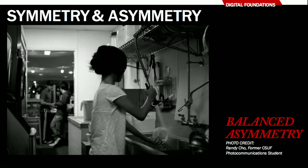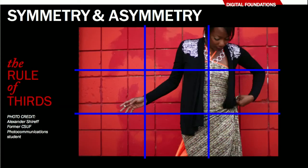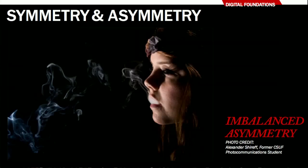Bringing up the rule of thirds grid as we look at asymmetric photographs that are imbalanced — imbalanced asymmetry really feels wrong, and you probably got it right if it doesn't feel right. Here we have an asymmetrically imbalanced image, and notice the subject is almost exactly on that right vertical line — strict adherence to the rule of thirds. What's happening in the center cell is almost nothing, just a little line of direction from her arm, and the hand with a cigarette near the intersection of two rule-of-thirds lines.